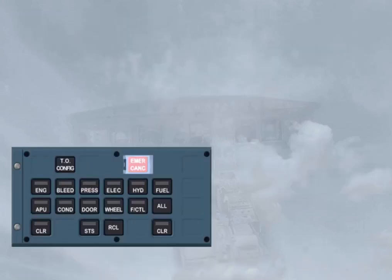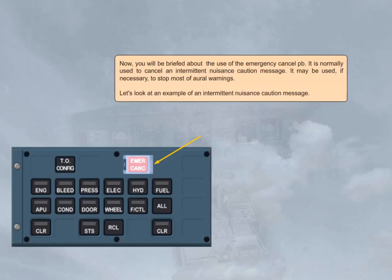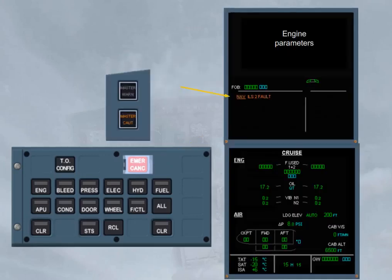Now, you will be briefed about the use of the emergency cancel push button. It is normally used to cancel an intermittent nuisance caution message. It may be used, if necessary, to stop most oral warnings. Let's look at an example of an intermittent nuisance caution message. As you confirm, it is a real nuisance, and the only possibility to stop it is to lift the guard and then to press on the emergency cancel push button. We will do it for you.